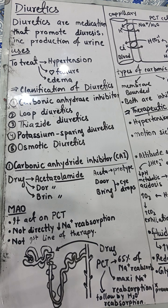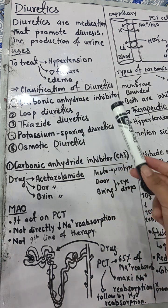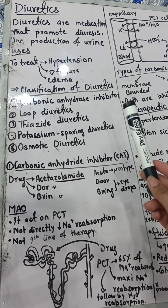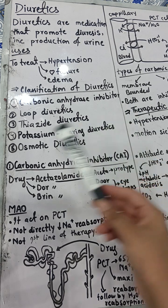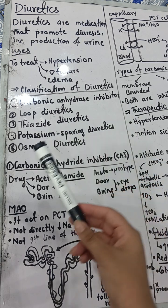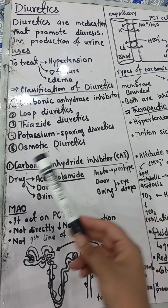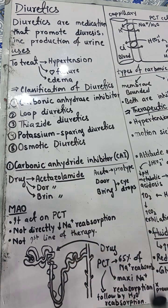The classification of diuretics is divided into five groups: carbonic anhydrase inhibitors, loop diuretics, thiazide diuretics, potassium-sparing diuretics, and osmotic diuretics.